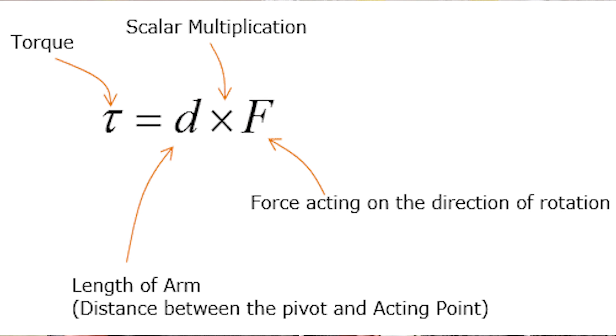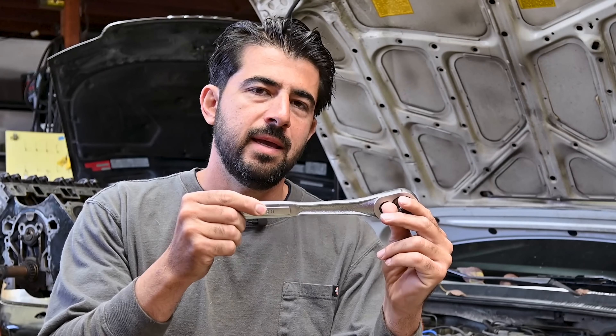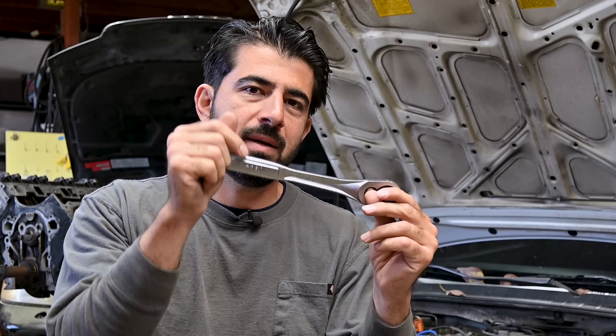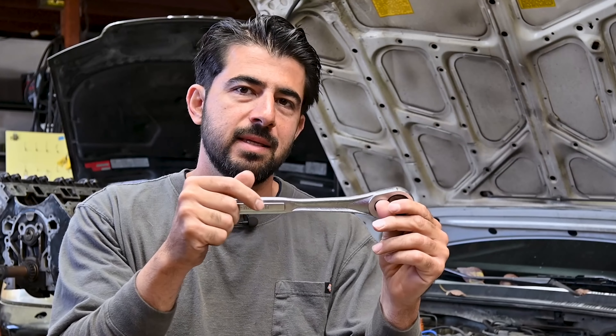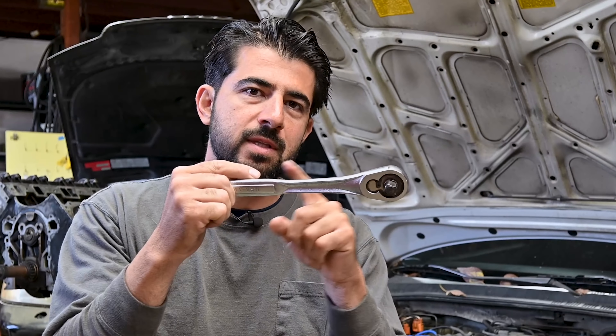The formula for torque is basically distance times force. Here's a quick demonstration. Let's say I wanna twist a nut using this ratchet. Let's say this ratchet is a foot long, and I can only produce 20 pounds of force. So basically distance times force — one foot times 20 — will equal 20 pound-feet of torque applied to this nut.